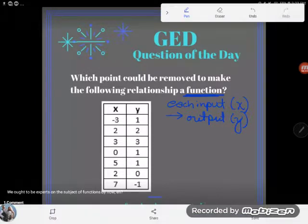So currently the relationship described in this table, you can see we have some X values, we have some Y values. What I'm saying here is when X is negative three, Y is one. When X is two, Y is two, so on and so forth. And I can see that each input value here is mapped to one output value.